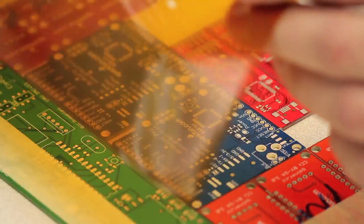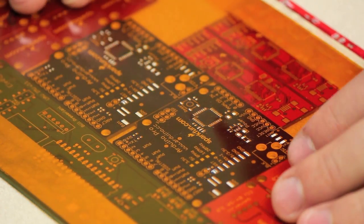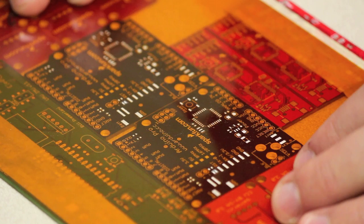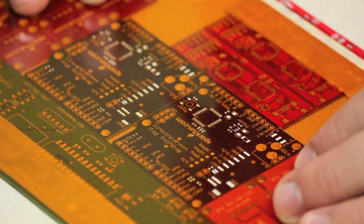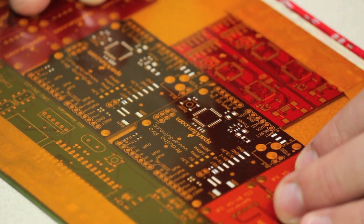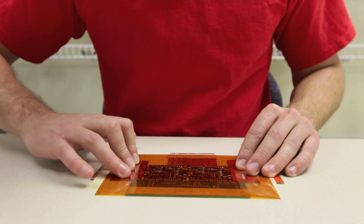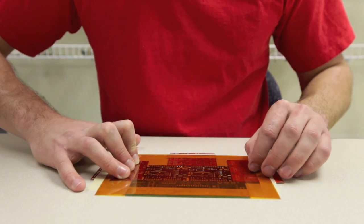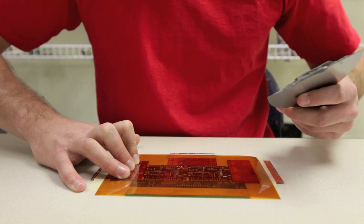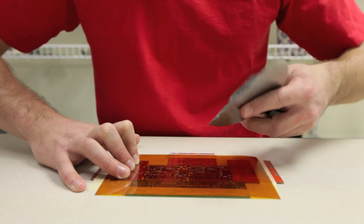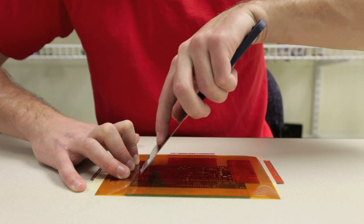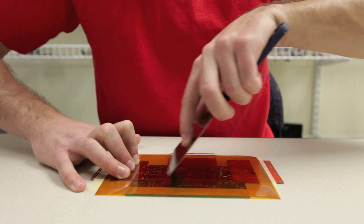Now that we have our putty knife ready to go with the paste on it, we want to take the stencil and lay it over the PCB. You'll want to line up the holes of the stencil exactly with the footprint of the PCB. Once you have it lined up, you want to apply firm pressure with your opposite hand. And then you're going to take the putty knife and you're going to apply the paste from side to side like that.